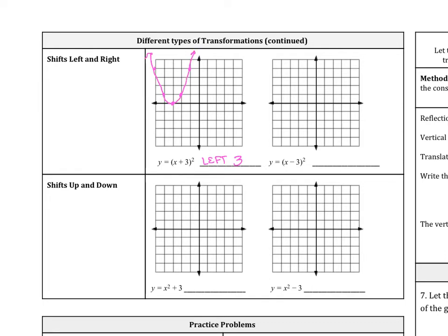The other one, if we have minus 3, that means we're going to the right 3. So move the vertex right 3 and then use the pattern right 1, up 1, right 1, up 3, left 1, up 1, left 1, up 3, and here is the graph.